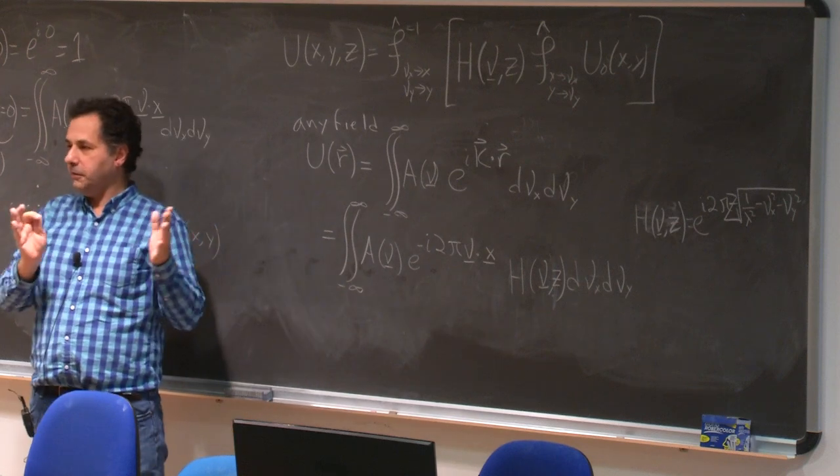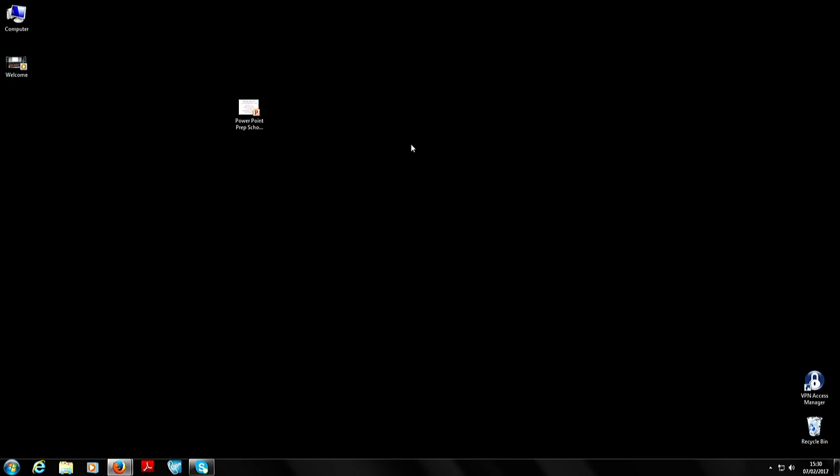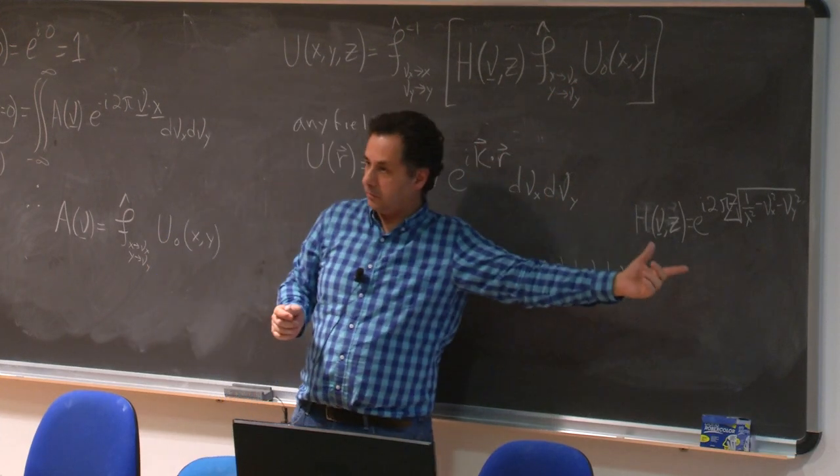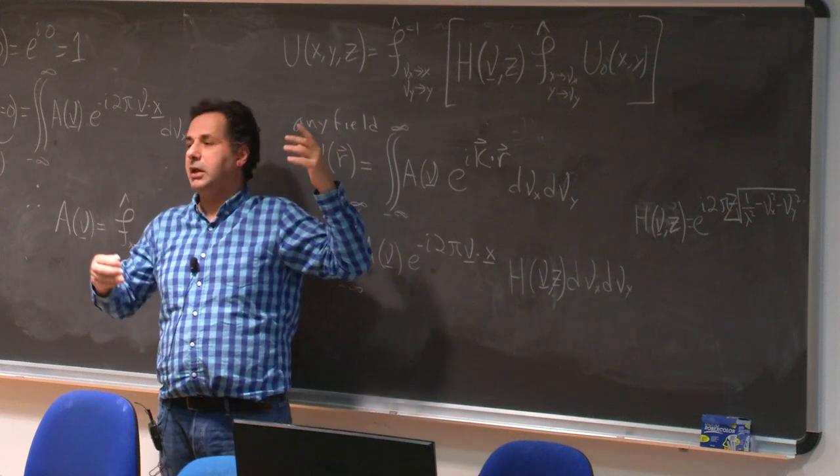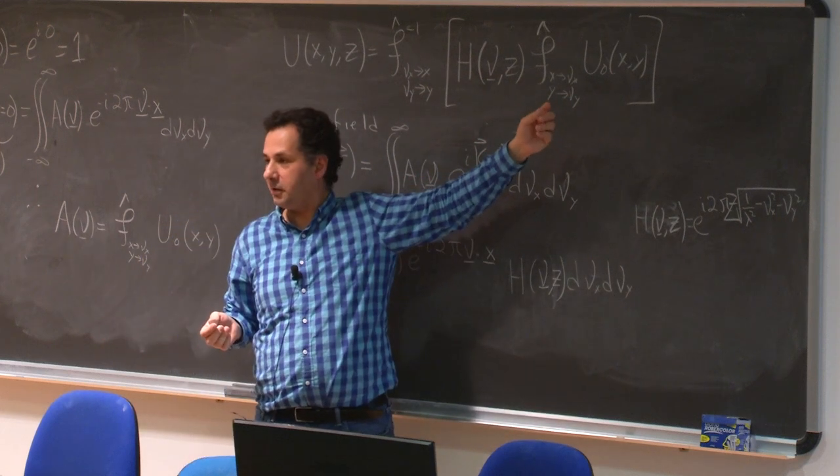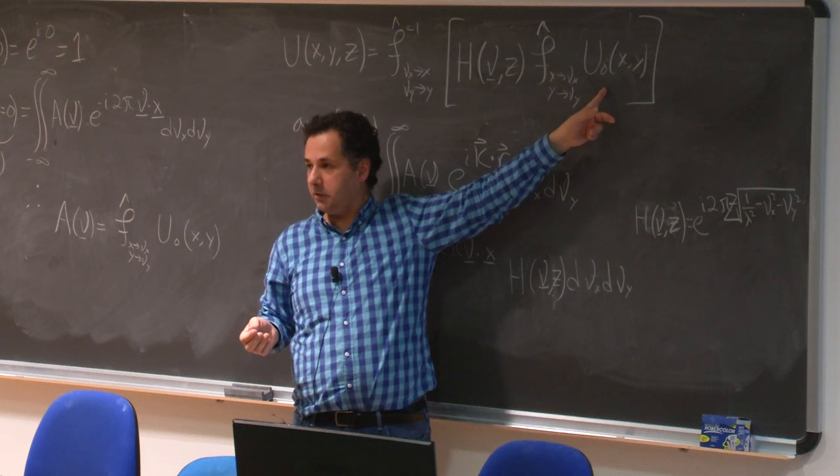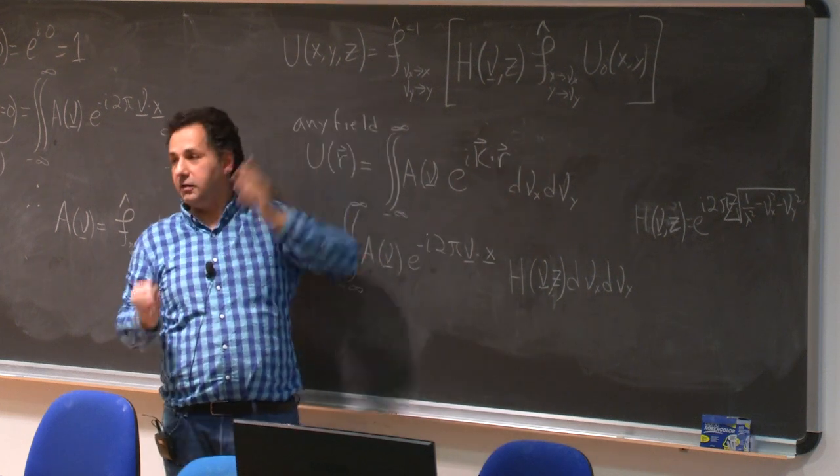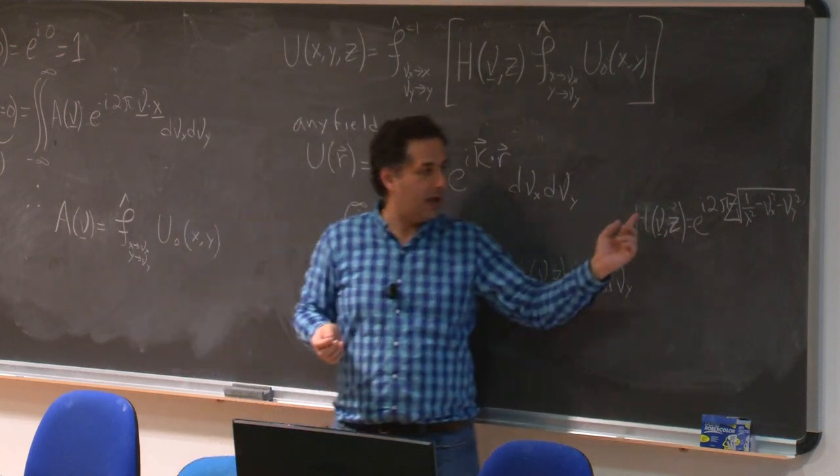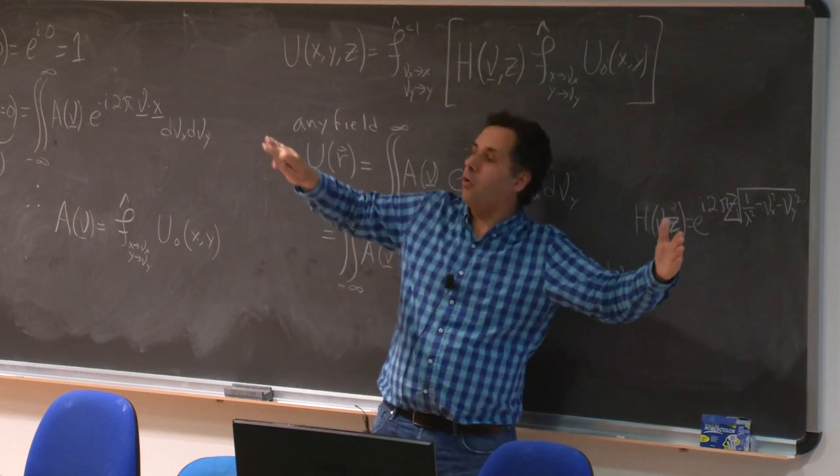So to propagate the field from a known initial plane, the plane waves representation tells me I just have to do the Fourier transform, multiply it by this simple transfer function, and inverse Fourier transform. So it's again, our signal and response. The signal is now the initial field, and the response is the final field after propagation. And the transfer function is this phase that accumulates in the propagation or the exponential decay.